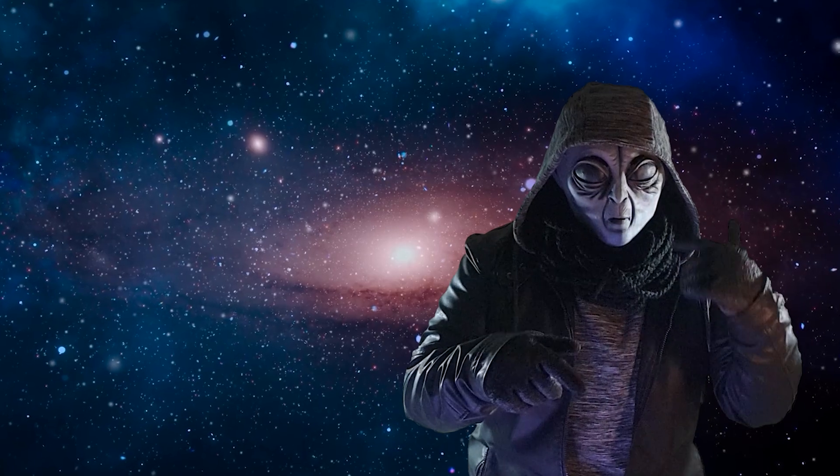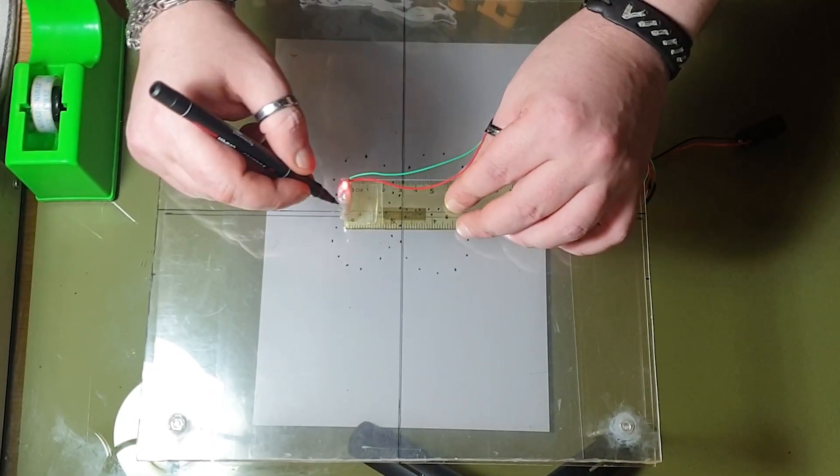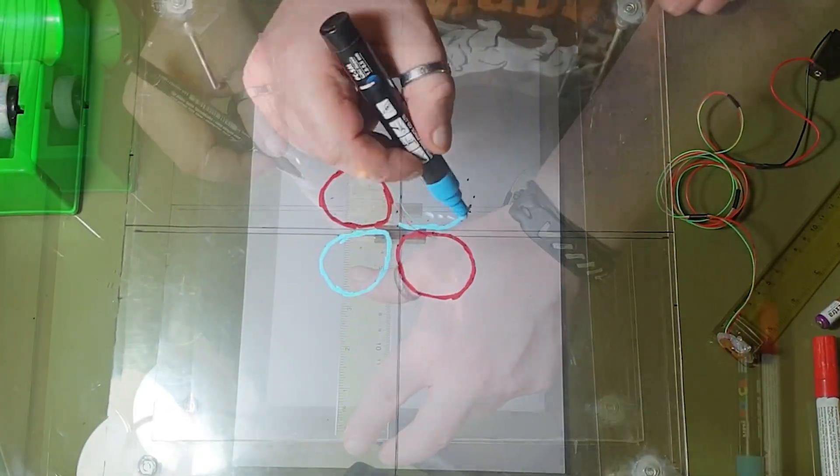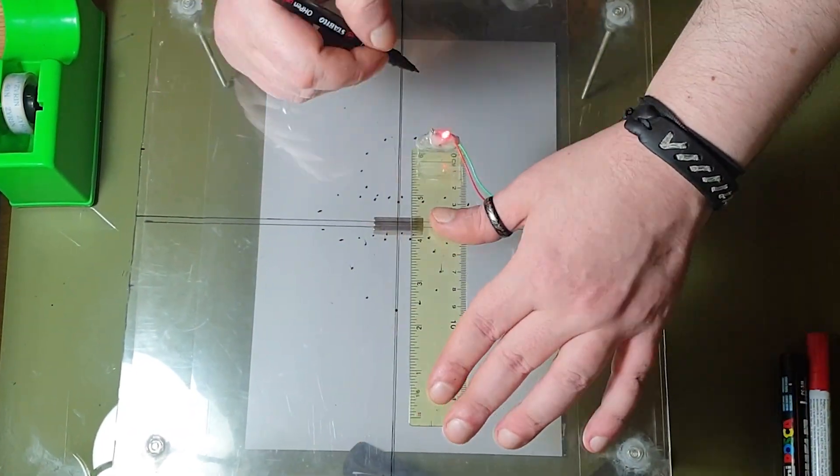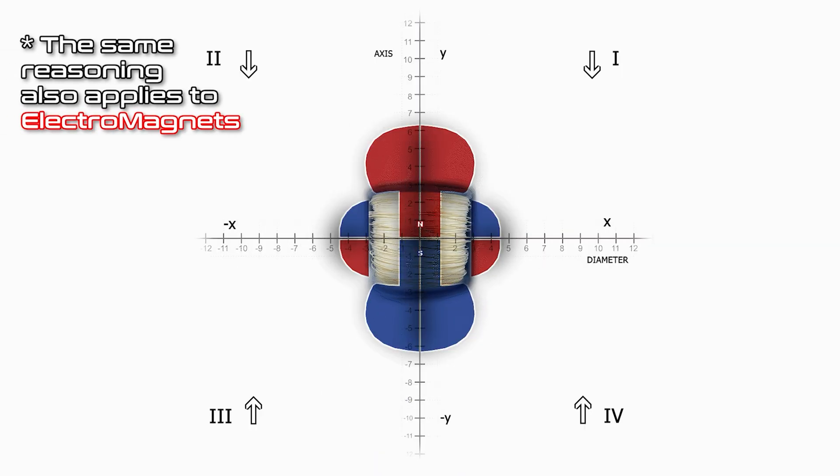And here's the extraordinary part. These shapes do not appear once by chance. They repeat consistently, and they change predictably, following the same rules every time the experimental parameters are modified.